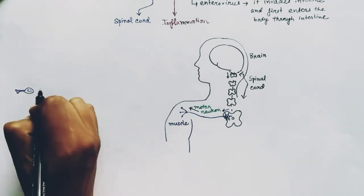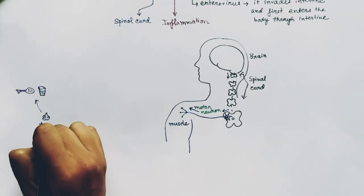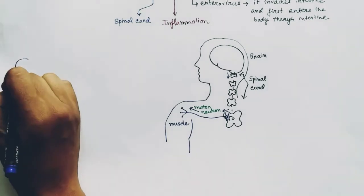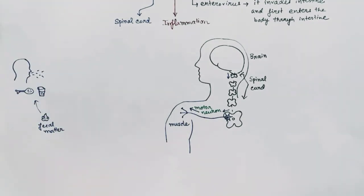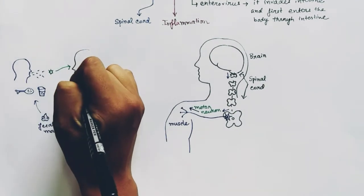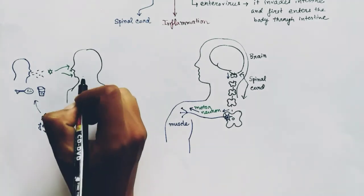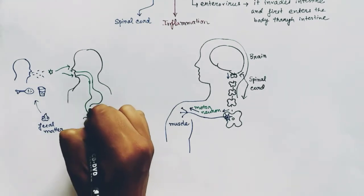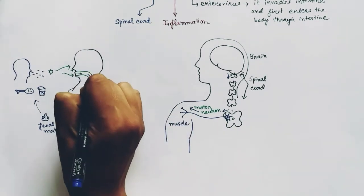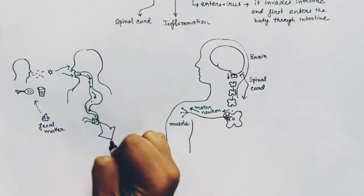The poliovirus can get inside our body through contaminated food or drink. It can be fecal-oral contamination, or it can also enter our body through sneezing or coughing from an infected person — contaminated droplets carrying the poliovirus. Once inside, it goes through the GI tract, entering through the mouth, passing through the stomach, and reaching the small intestine where it can invade the intestinal cells.